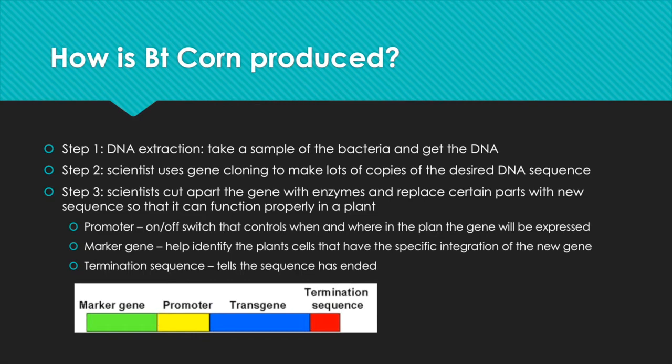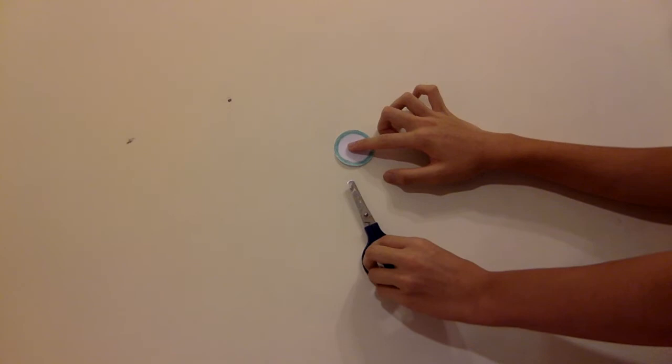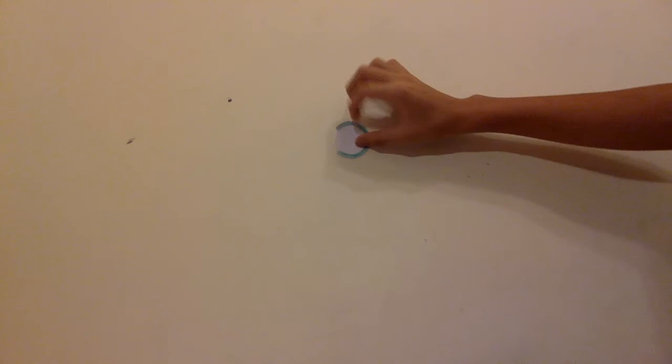How is BT corn produced? The first step is DNA extraction — you take a sample from the bacteria and get the DNA. In the first step of gene cloning, you take a DNA plasmid from the bacteria as shown here. Then you take an enzyme that will cut apart this DNA plasmid. I'll use a scissor here to represent the enzyme because, like a scissor, it cuts apart the plasmid.